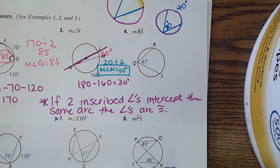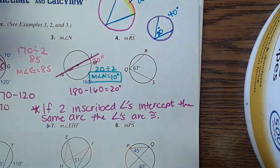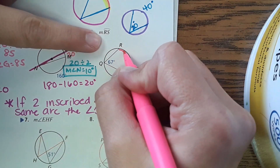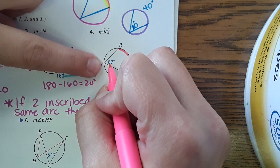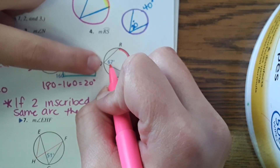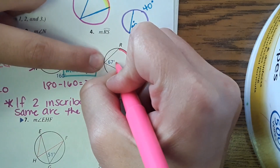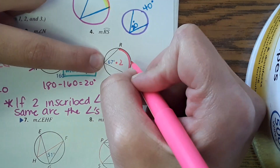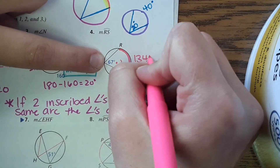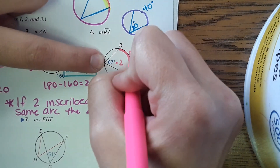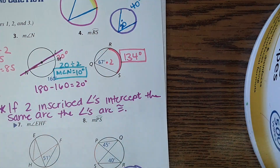Number four: we're back to basics. It asks for the arc measure RS, and the inscribed angle measure is given as 67°. We just multiply by 2 to get the arc, which comes out to 134 degrees.